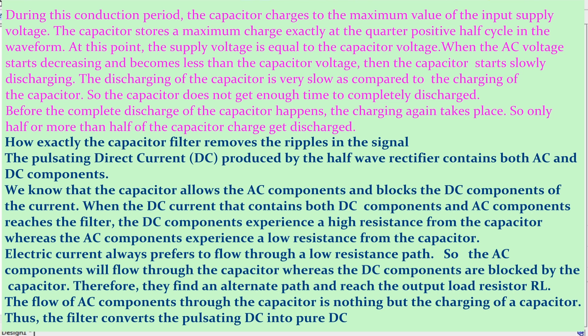The capacitor filter removes the ripples in the signal. The pulsating direct current produced by the half-wave rectifier contains both AC and DC components. The capacitor allows AC components and blocks DC components. When the current containing both components reaches the filter, the DC components experience high resistance from the capacitor, whereas the AC components experience low resistance. Since current always prefers to flow through a low resistance path, the AC components flow through the capacitor while the DC components are blocked. Therefore, they find an alternate path and reach the output load resistor. Thus, the filter converts the pulsating DC into pure DC.